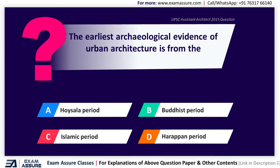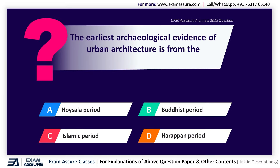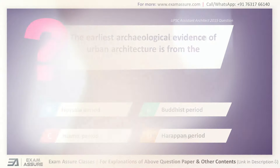Question: The earliest archaeological evidence of urban architecture is from — Option A: Hoysala period, Option B: Buddhist period, Option C: Islamic period, Option D: Harappan period. The correct answer is Option D, Harappan period.